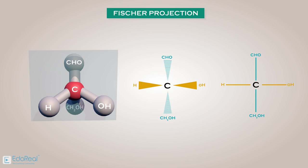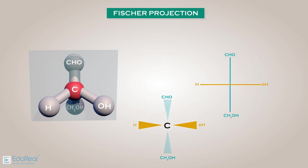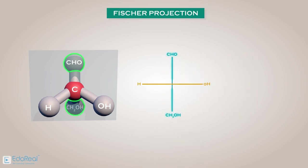According to Fischer projection, central carbon can be replaced with the crossing of lines. The vertical lines are considered to be the bonds away from the observer, or project below the plane of paper. The horizontal lines are considered to be the bonds nearer to the observer, or project above the plane of paper. This is how we can easily draw Fischer projection.